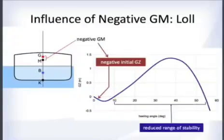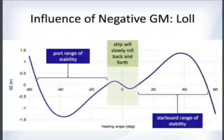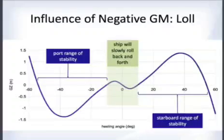That crossing point is called the angle of loll. It means you have a reduced range of stability — for example, instead of going from 0° up to 55°, you only get stability from 10° to 55°. Within the angle of loll on both port and starboard, the ship rocks back and forth uncontrollably because of the negative GM. This is not an ideal operating condition.